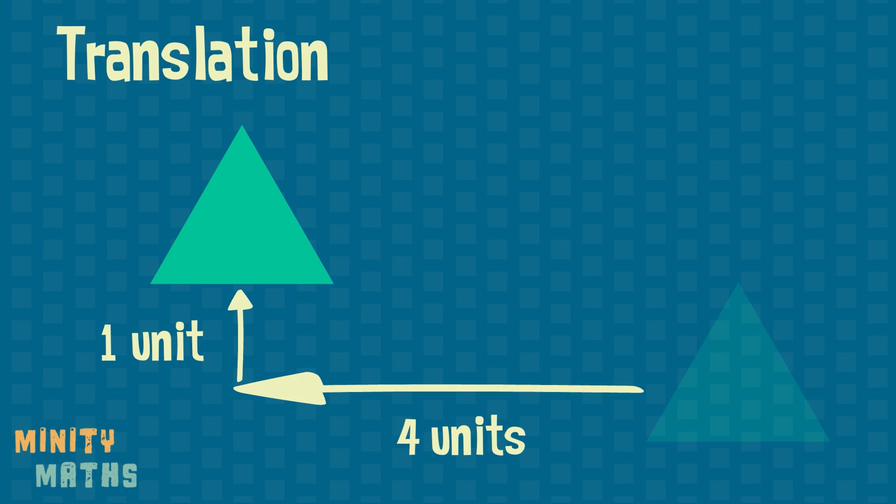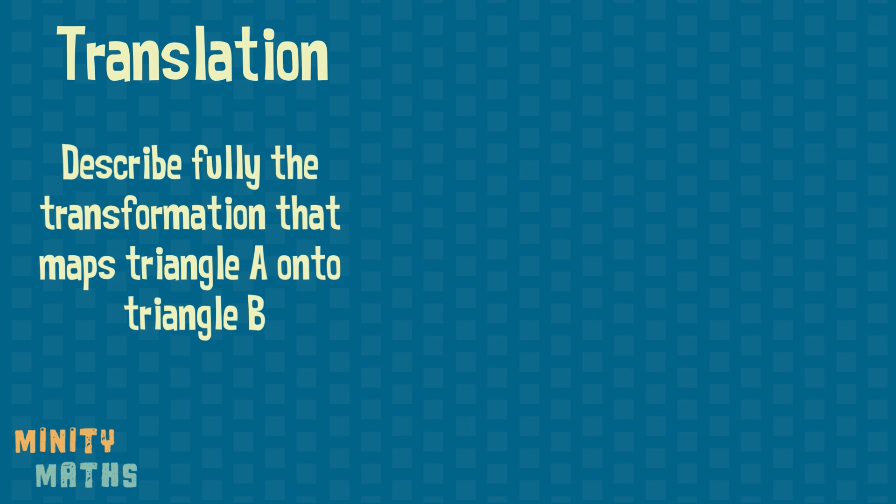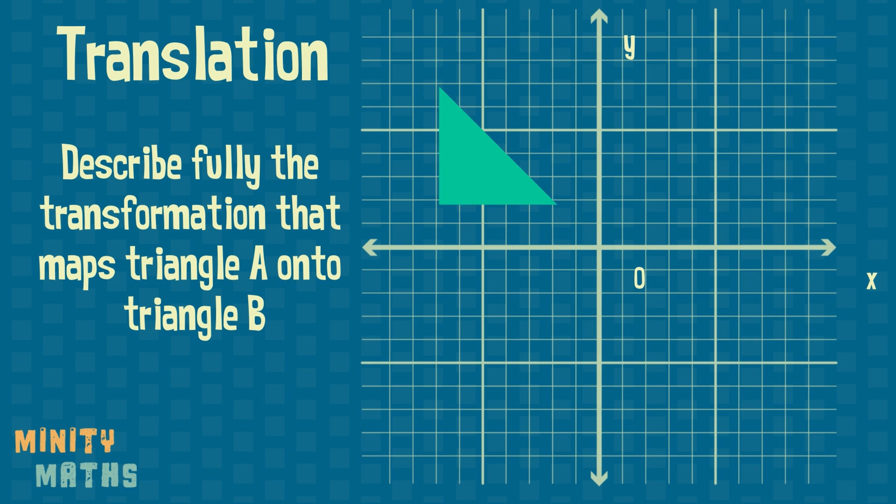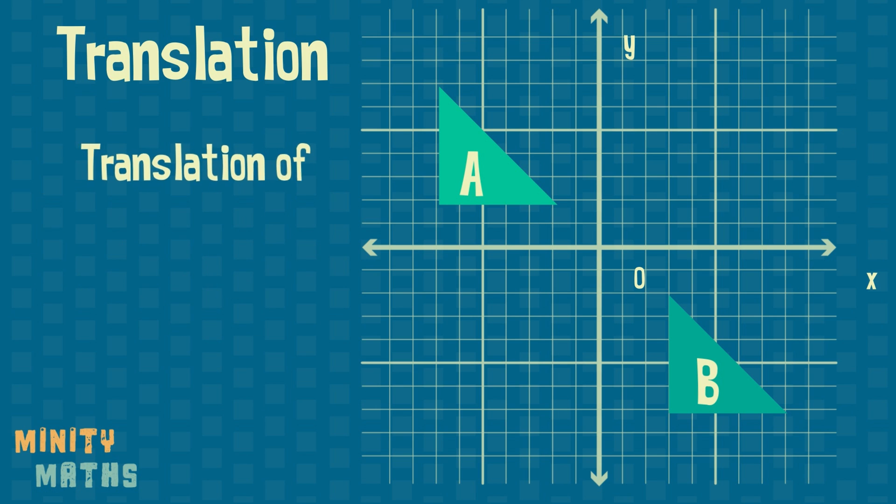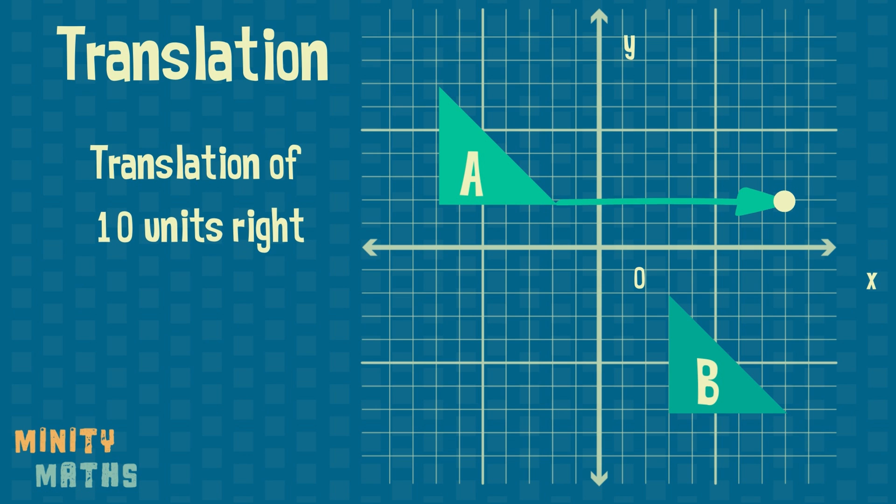Let's look at an example. We need to describe how shape A is translated to shape B. The description must include two details: the change in position horizontally and the change in position vertically. To calculate these changes, pick any vertex of the shape and use this to count how many units the shape has moved horizontally and vertically.